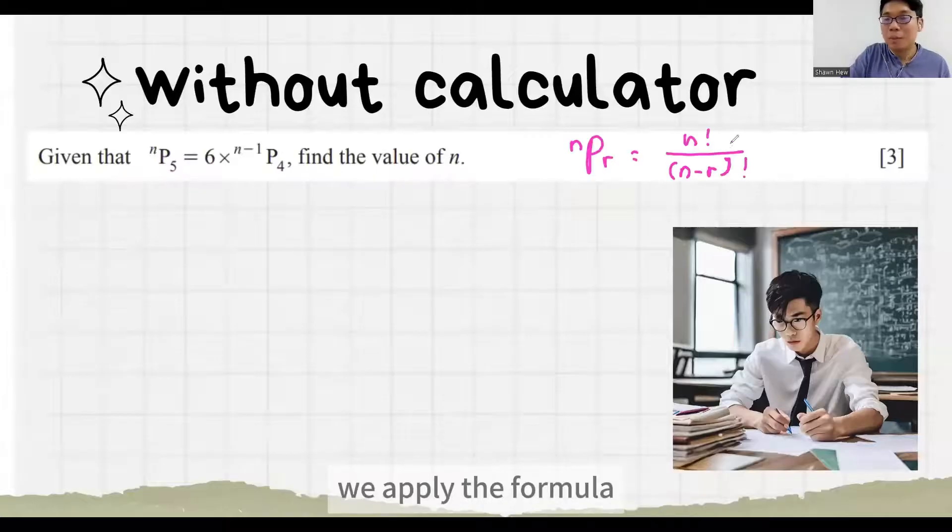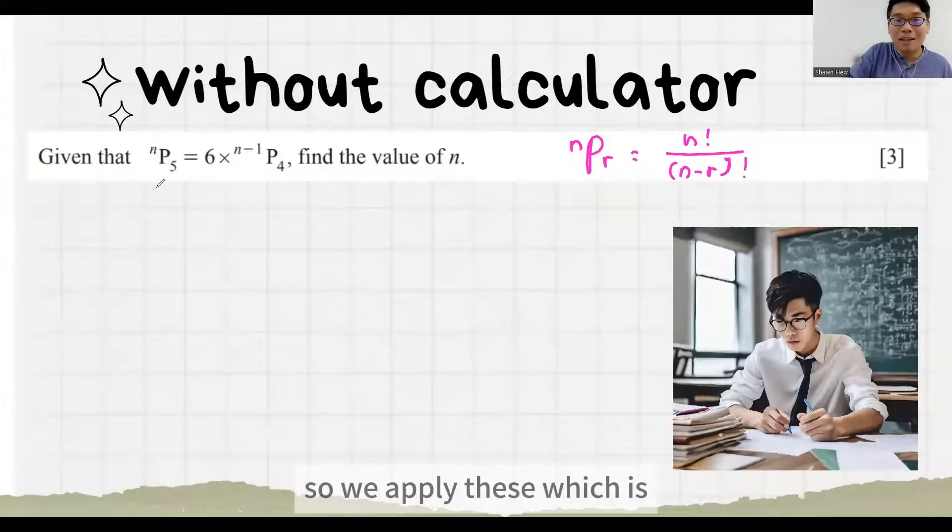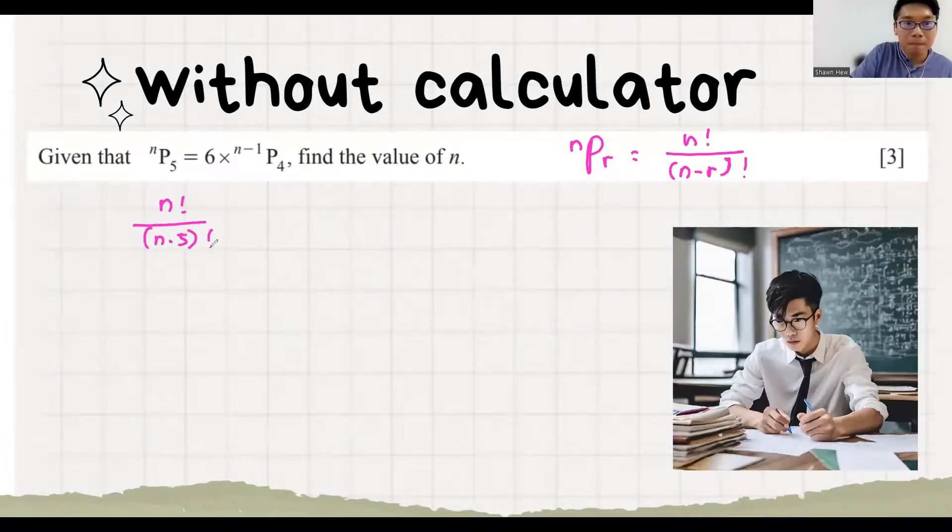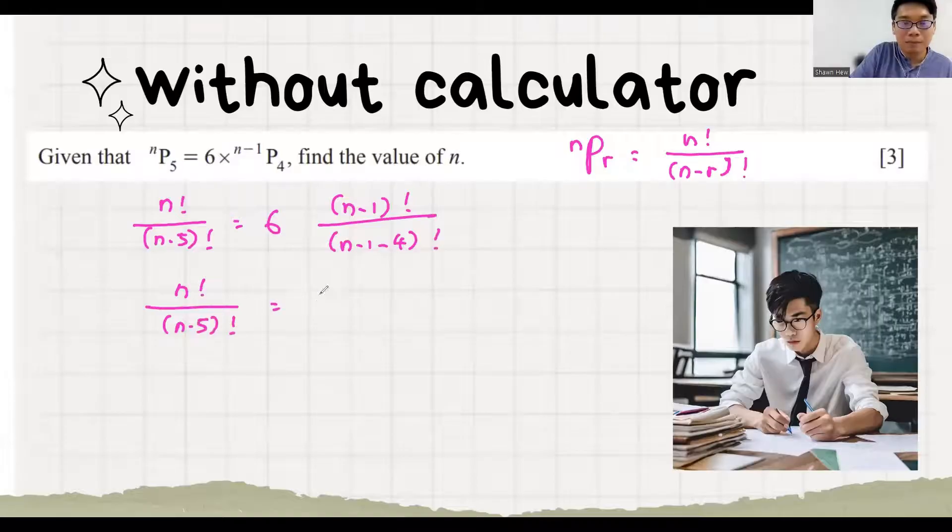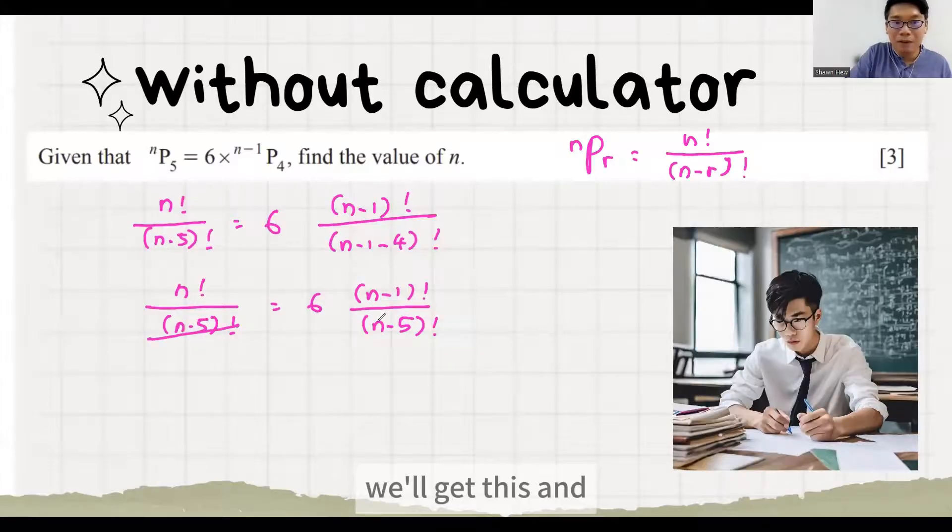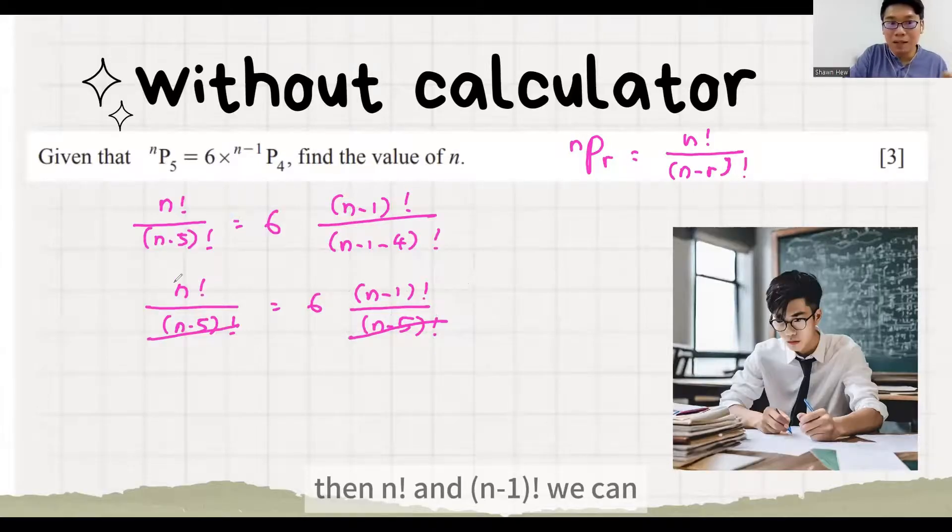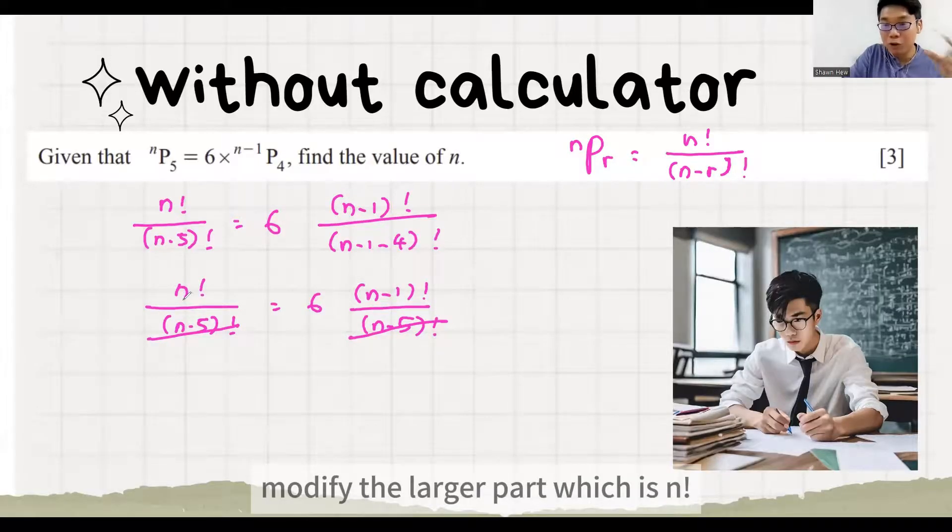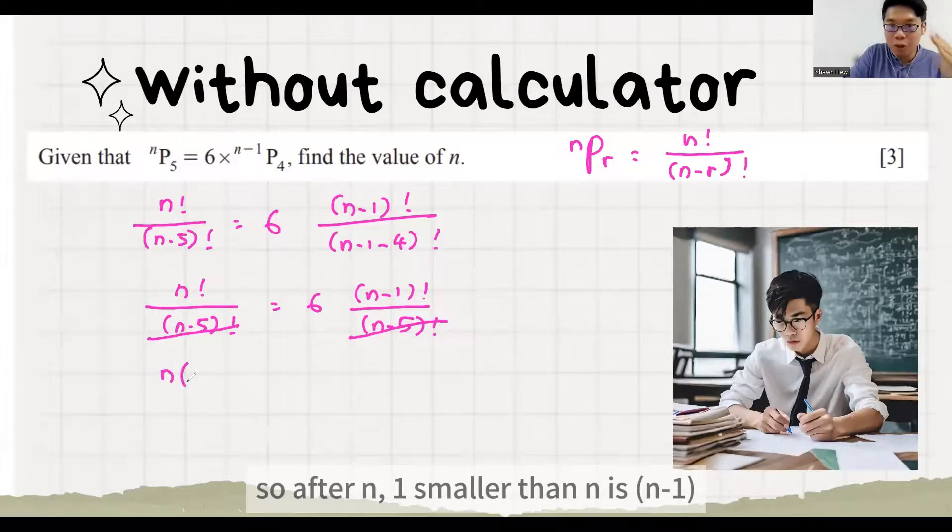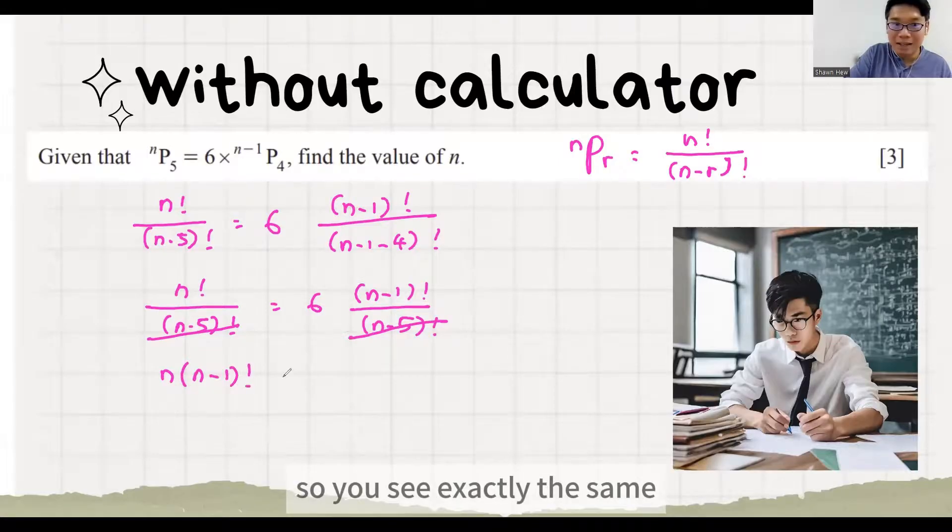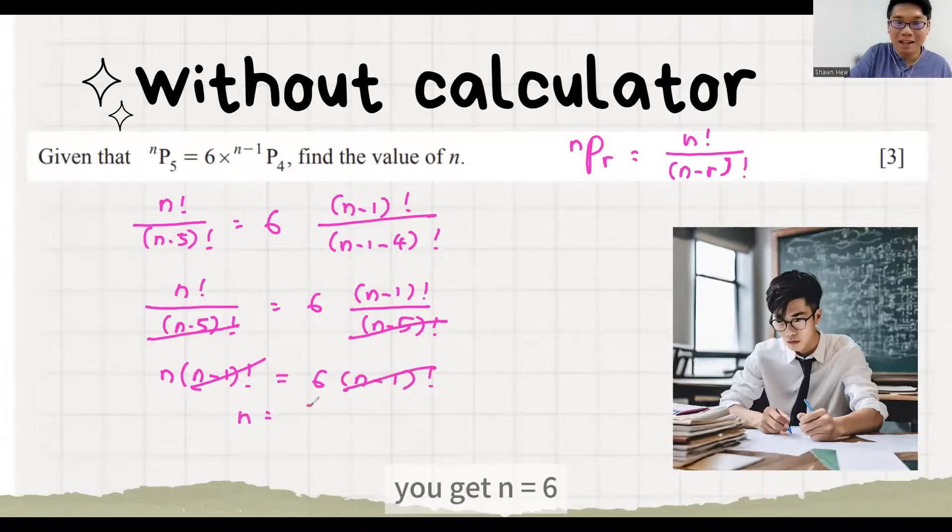So let's have a look how to do this. We apply the formula. nPr equals to n factorial over n minus r factorial. So we apply this. We'll get this and n minus 5 factorial n minus 5 factorial we can remove it. Then n factorial and n minus 1 factorial we can modify the larger part which is n. So after n, 1 smaller than n is n minus 1. So you see exactly the thing. Then you get n equals to 6.